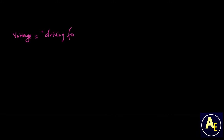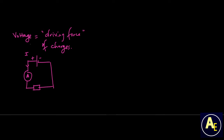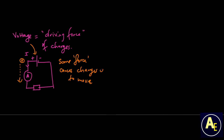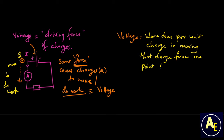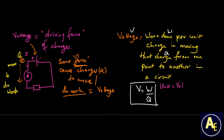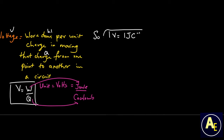Now let's look at voltage. Voltage is dubbed the driving force of a circuit — the driving force of the charges that move through a circuit. It is also called potential difference, and it's applied from the battery itself. There is some force required for these charges to actually move through a circuit; that force comes from the power source — the battery. So voltage is the work done per unit charge in moving that charge from one point to another in the circuit, giving us the equation V = W/Q, the unit of which is volts — equivalent to one joule per coulomb.